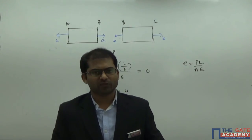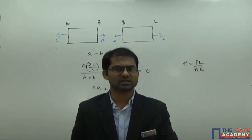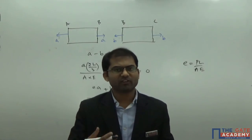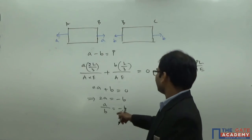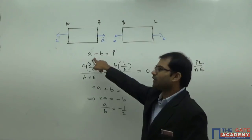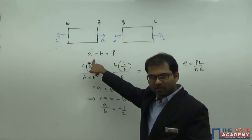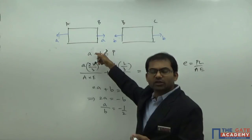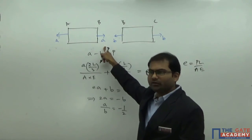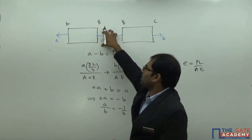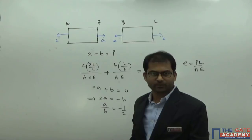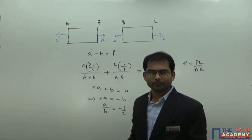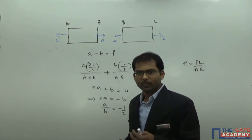If you are interested in finding the stresses of the individual parts, you can do so easily. Solving those two equations gives values of A and B, and dividing by the area of cross-section gives the stress. Overall elongation of the bar is equal to zero.